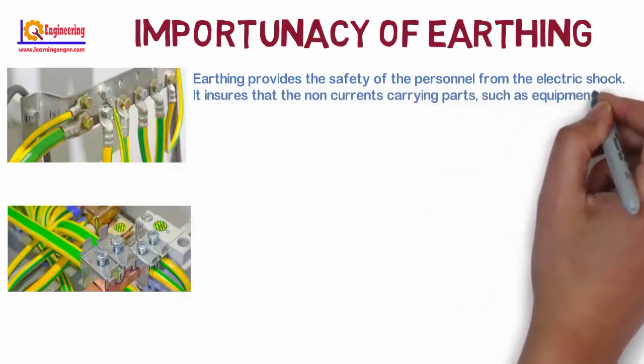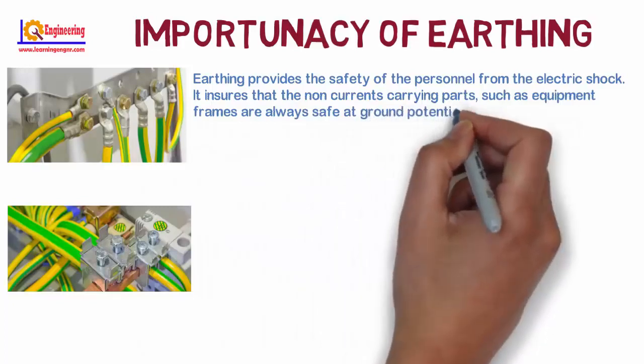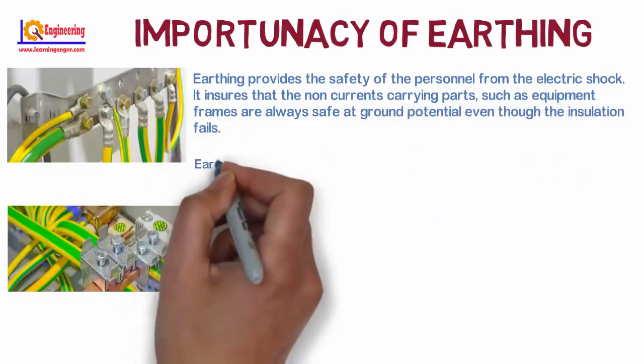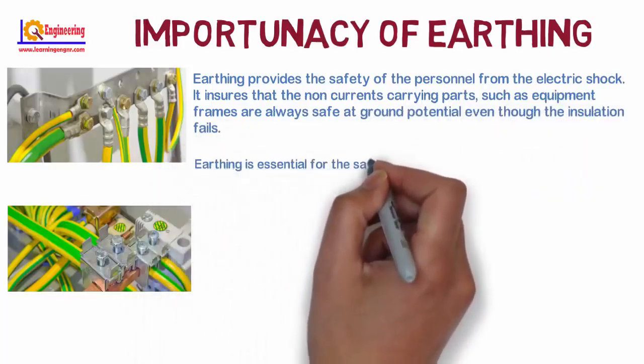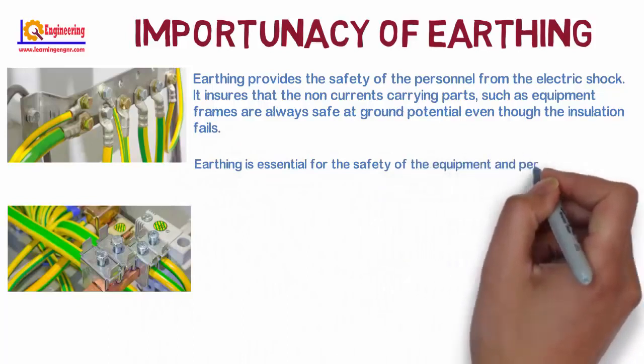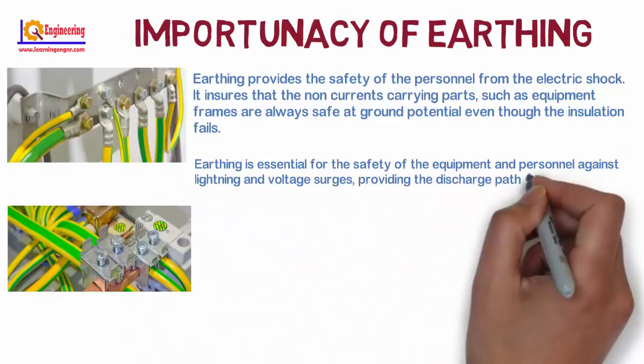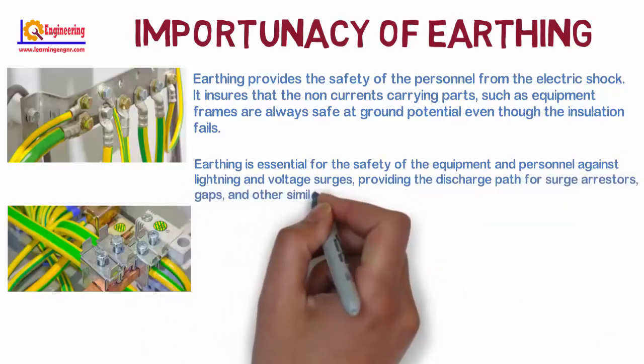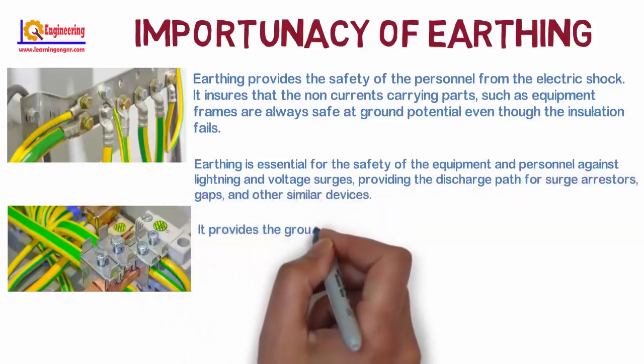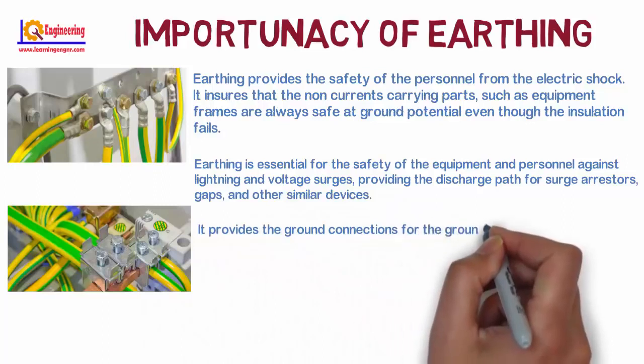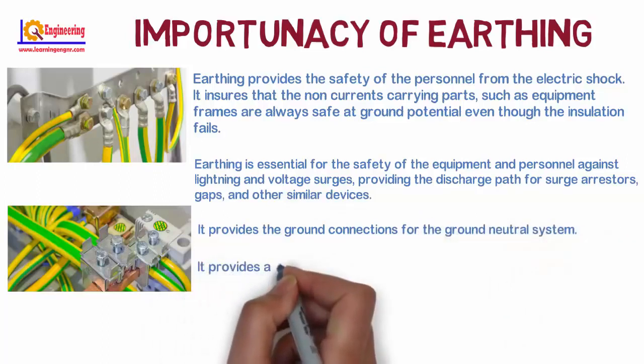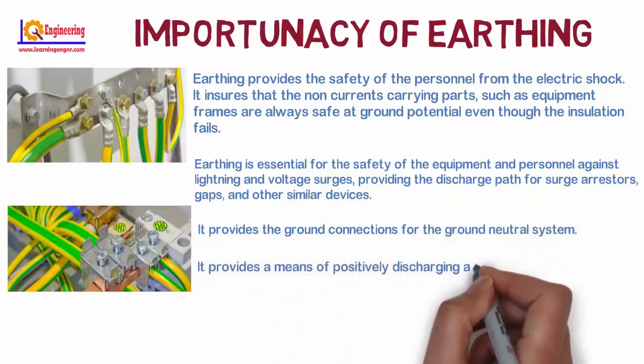Earthing is essential for the safety of equipment and personnel against lightning and voltage surges, providing the discharge path for surge arresters, gaps, and other similar devices. It provides the ground connections for the ground neutral system. It provides a means of positively discharging and de-energizing feeders or equipment before proceeding with maintenance on them.